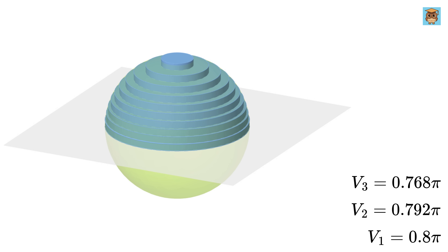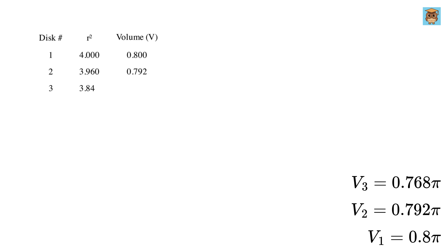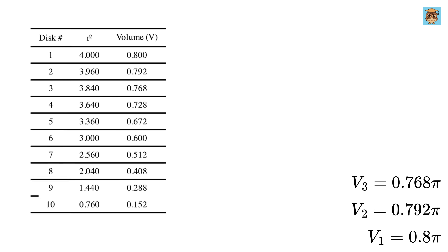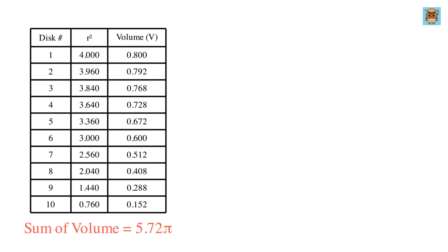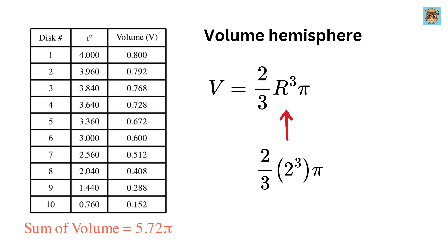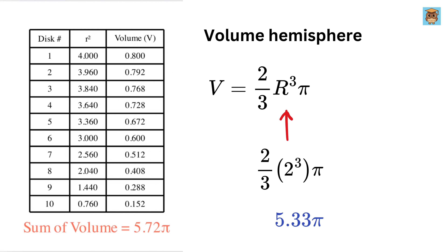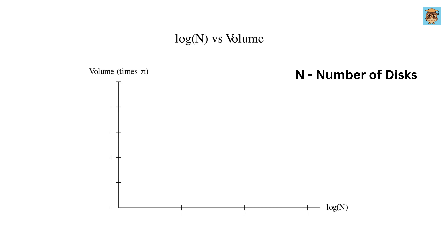We can keep doing the same for all other disks to find their volumes. A table shows the squared radius and volume of each disk. Summing the volumes of all 10 disks gives 5.72pi. The actual volume with r equals 2 is 2/3 times 2 cubed times pi, or 5.33pi. Our crude 10-disk approximation is not great but not very bad. A graph with log base 10 of the number of disks on the x-axis and estimated volume on the y-axis clearly shows that as we increase the number of disks, the estimated volume converges to the actual value.